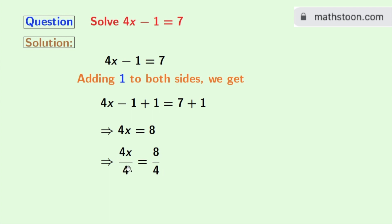In the left hand side 4, 4 get cancelled. So we are left with x. And as 8 divided by 4 is 2, we get x is equal to 2 as our final answer.